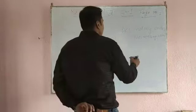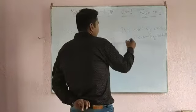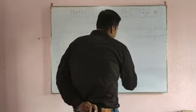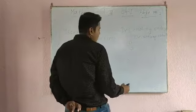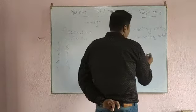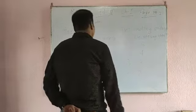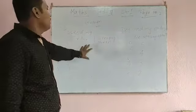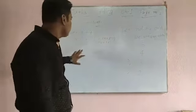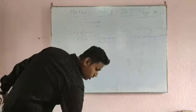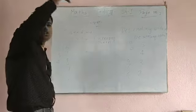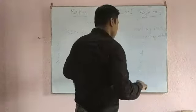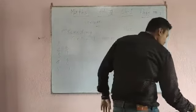Now in descending order it is decreasing: 8, 7, 6, 5, 4, 3, 2, 1. Understood the difference between ascending and descending order? Ascending means increasing, from down to top. Descending means decreasing, from top to down.